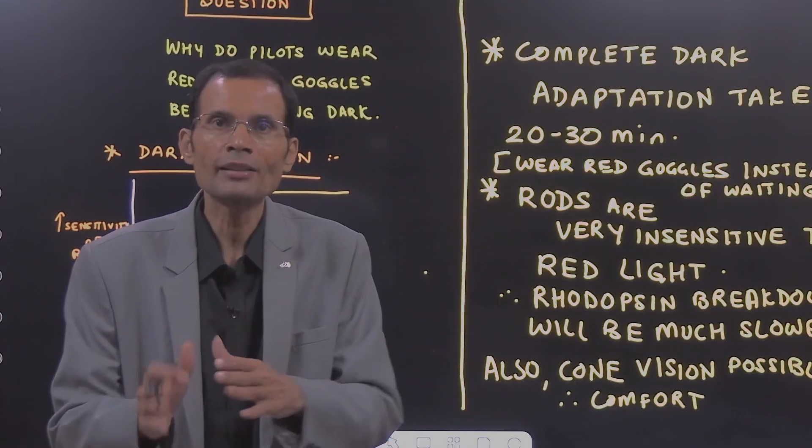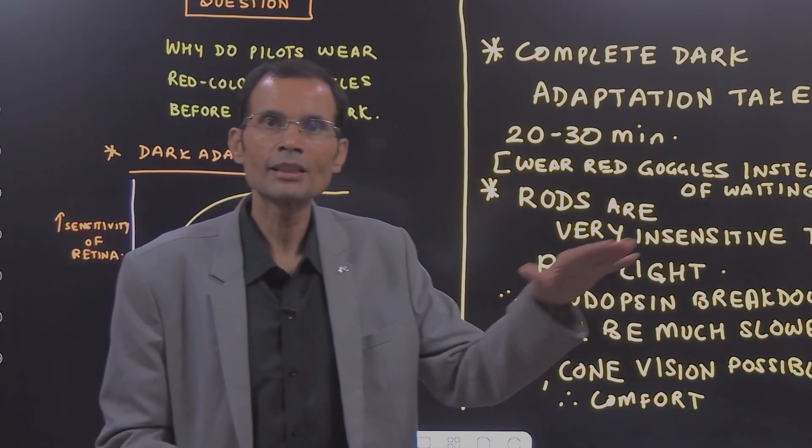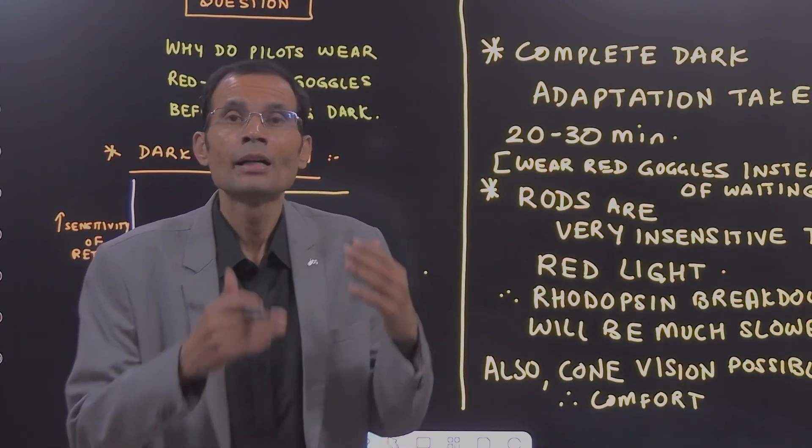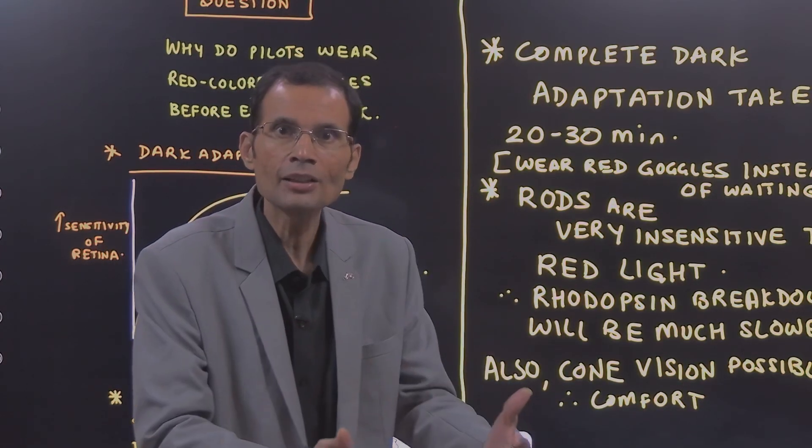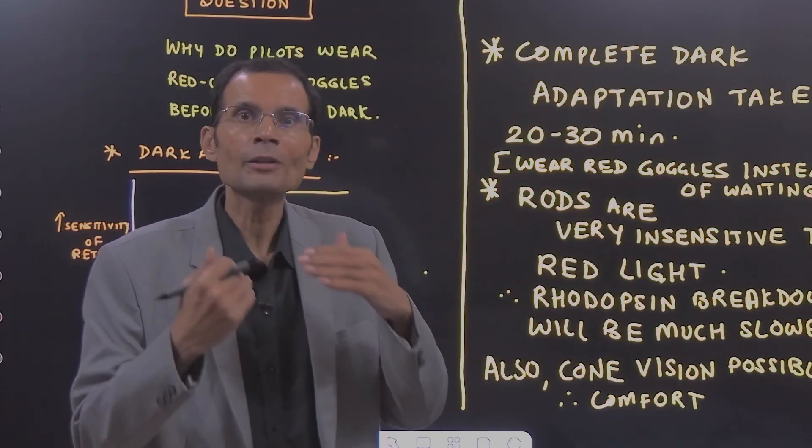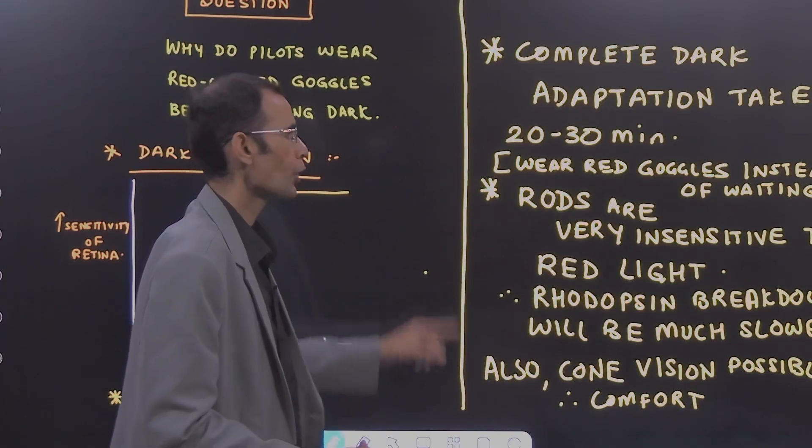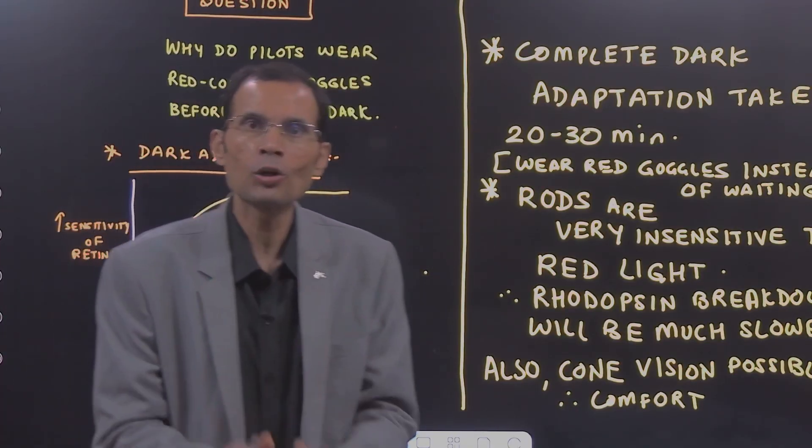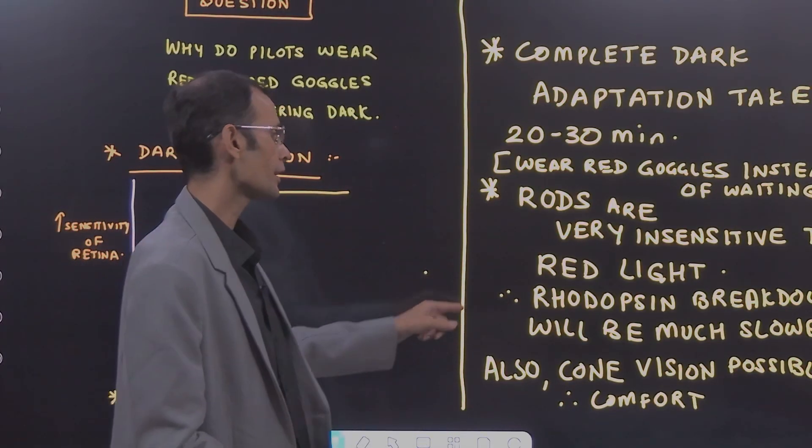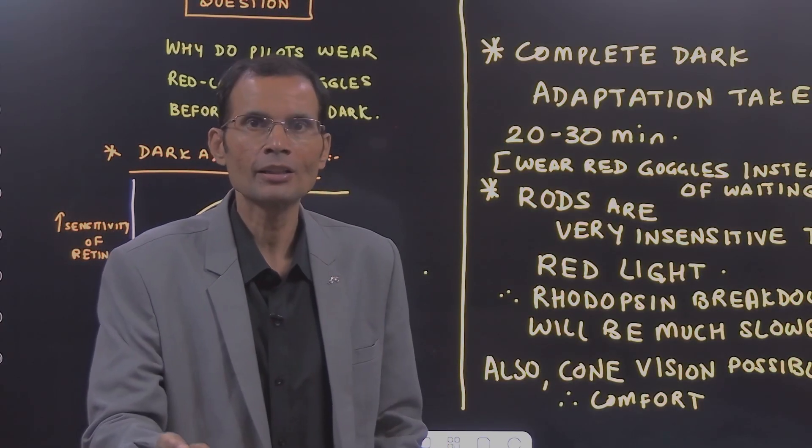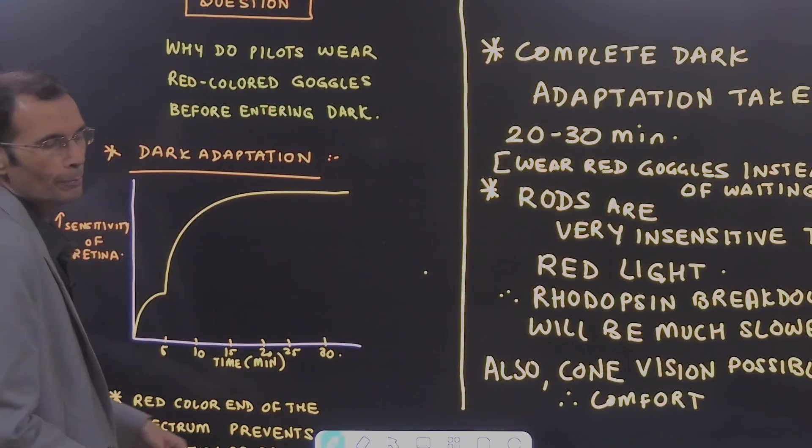What you got to write as an answer? Increased sensitivity of the retina by increased availability of rhodopsin. In the presence of red colour, rhodopsin will be available for much longer duration because rhodopsin breakdown is much slower in the presence of red colour and cone vision also will be provided by the red colour because cones adapt much faster.